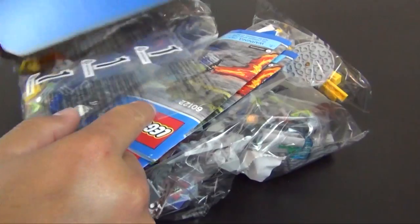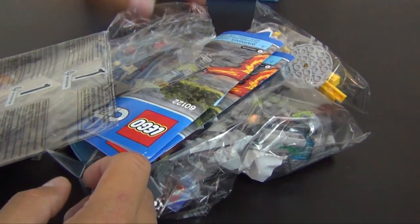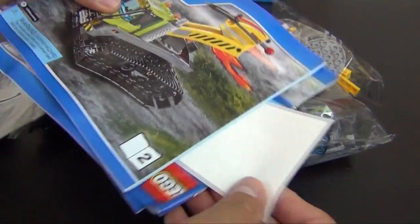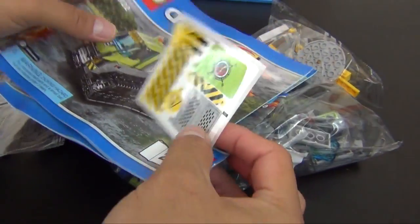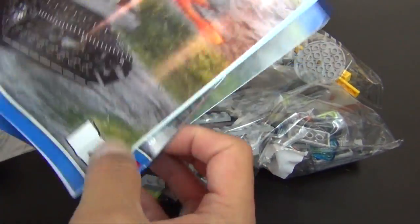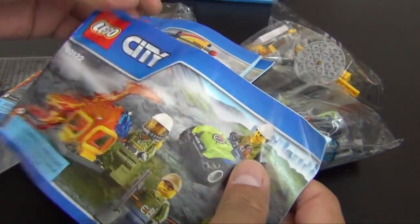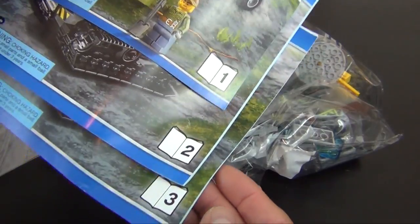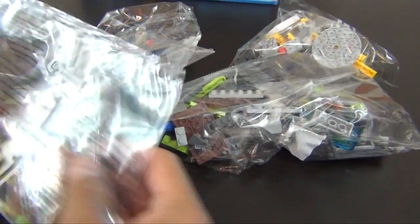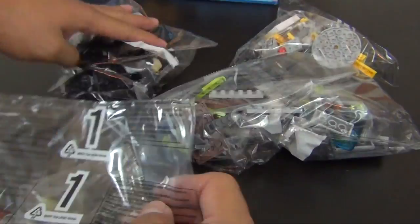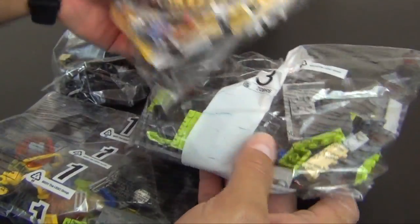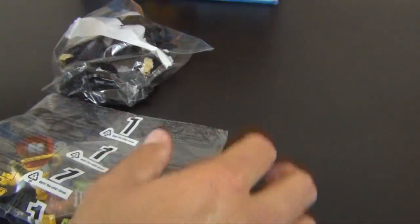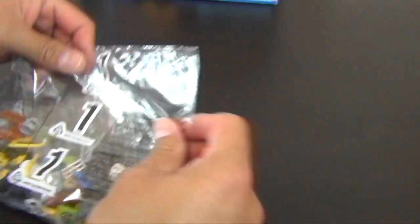We have two, actually three instruction books - instruction book one, two, and three - with a smallish sticker sheet. And we have numbered bags: bag number one, two, three, and bag four. We'll start with bag number one.